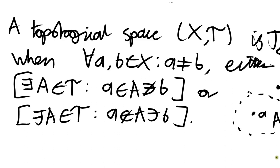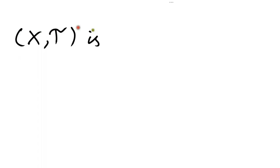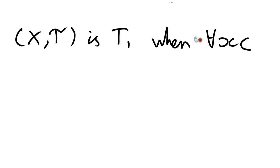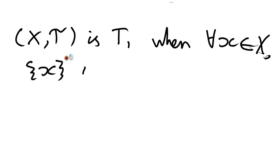We say that a topological space X-tau is T1 when, for every point in that space — every point little x — we have that the set which just contains little x is a closed set. In other words, a space is T1 when every singleton set is a closed set of that topology.